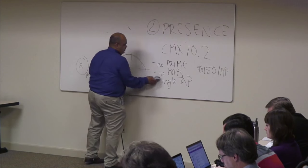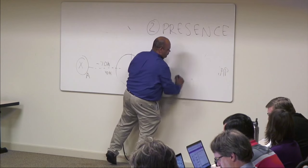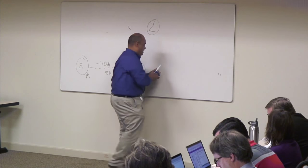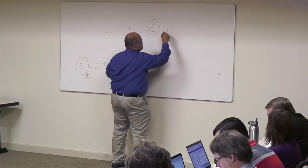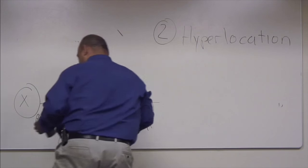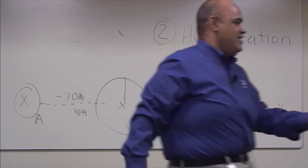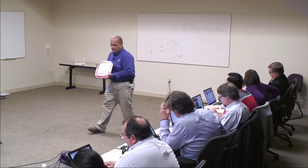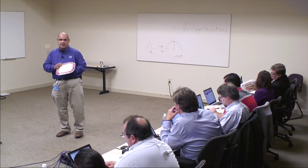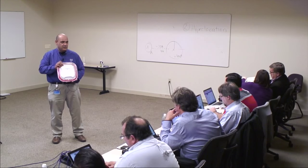The third big location change in CMX 10.2.1 is the one that has gotten the most press. It won the award at Interop and Interop Japan, and has won the Cisco Pioneering Award. It's called hyperlocation. This is the new hyperlocation AP — an enhancement and add-on to your existing 3700s or 3600s. You add two modules: a module on the back and this circular antenna.